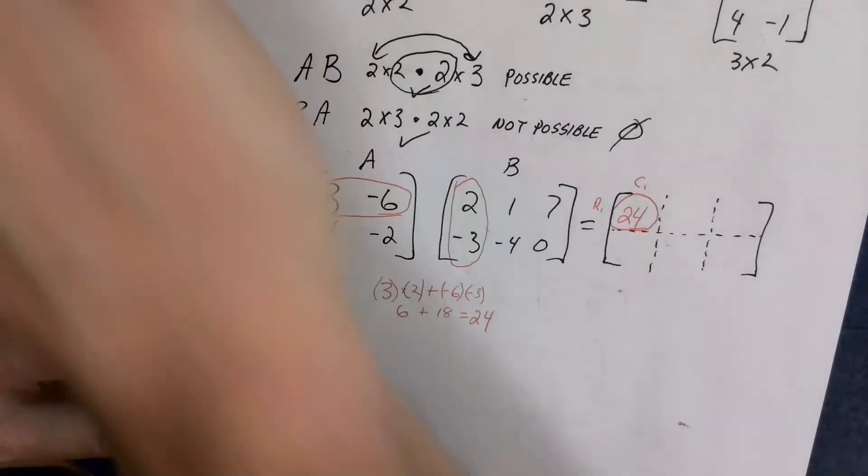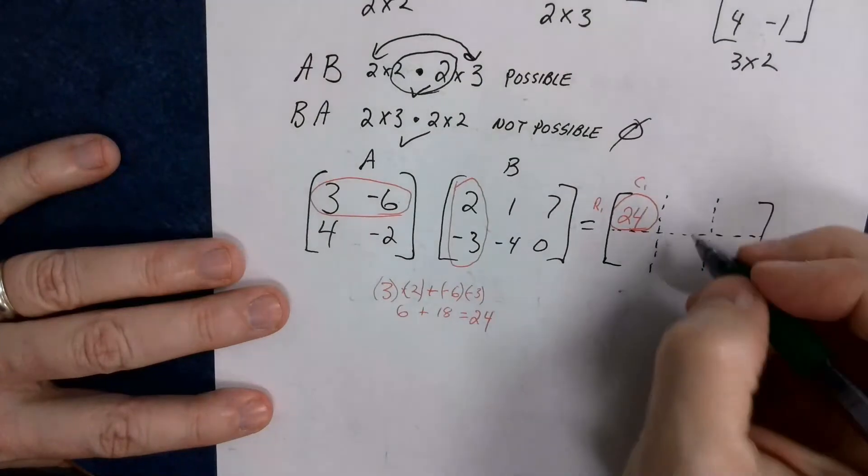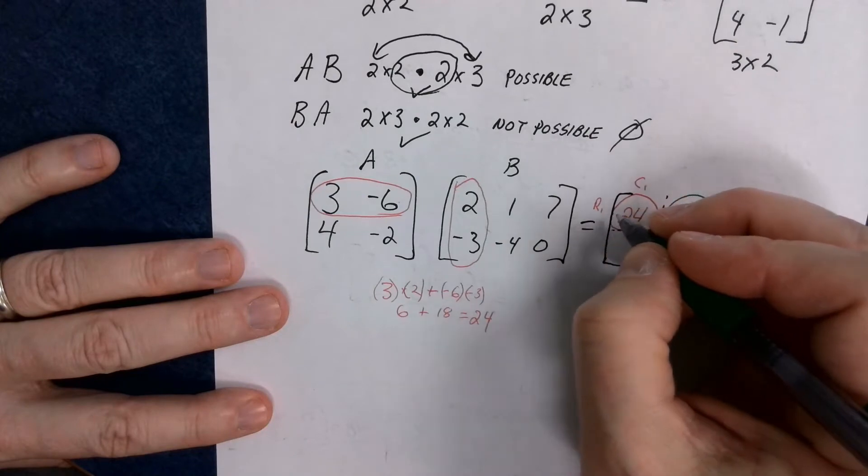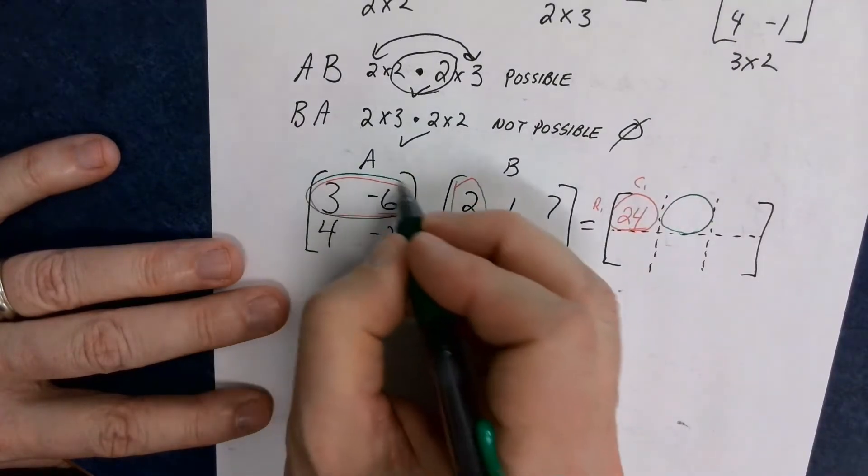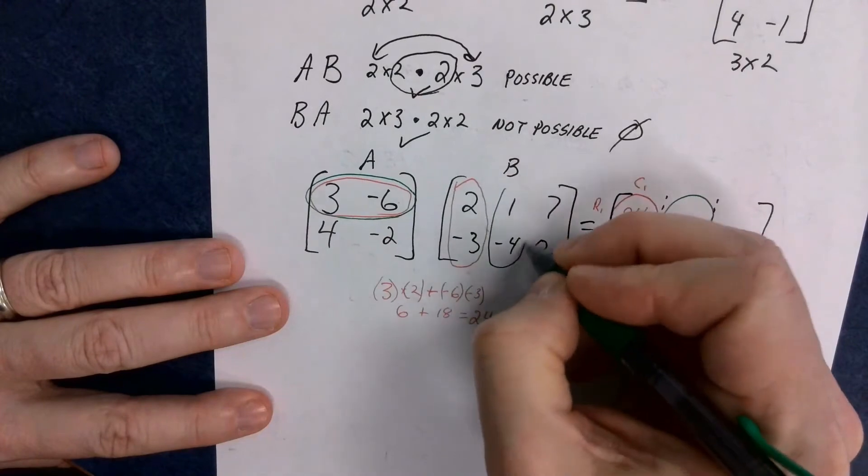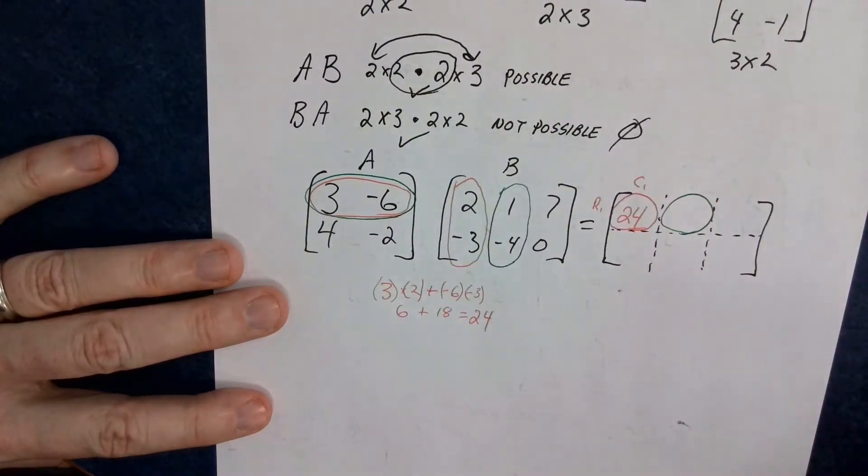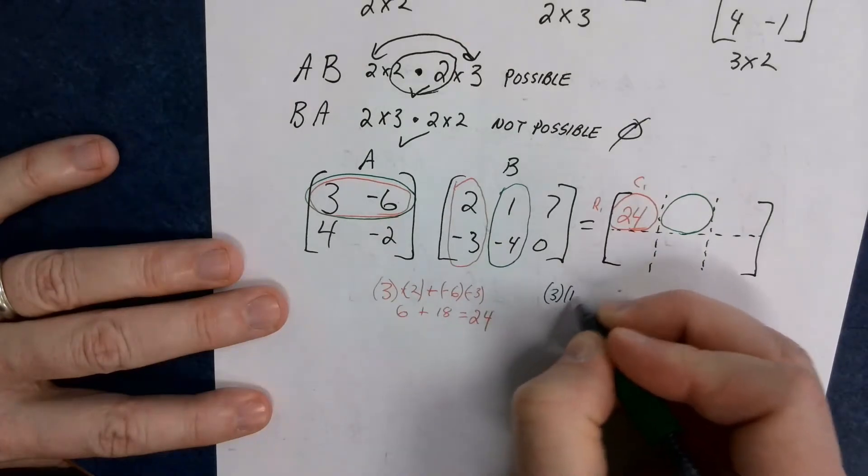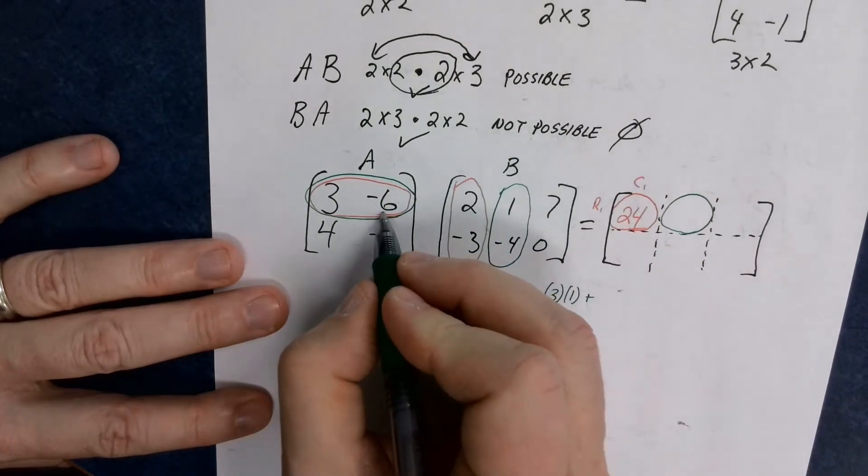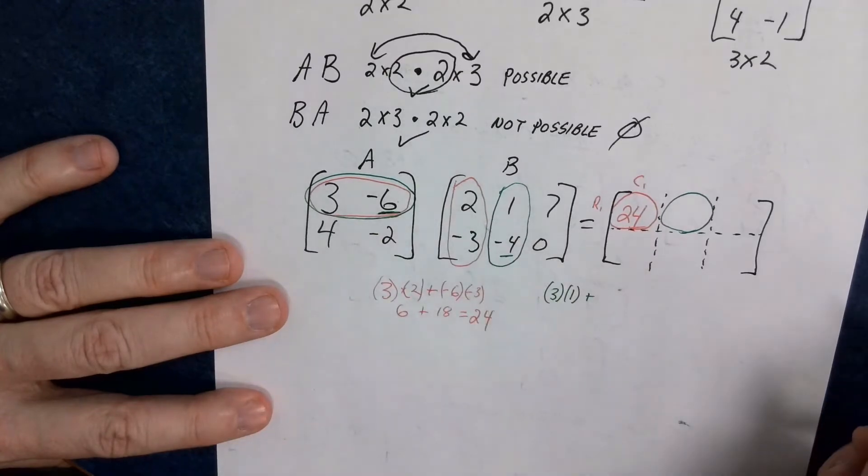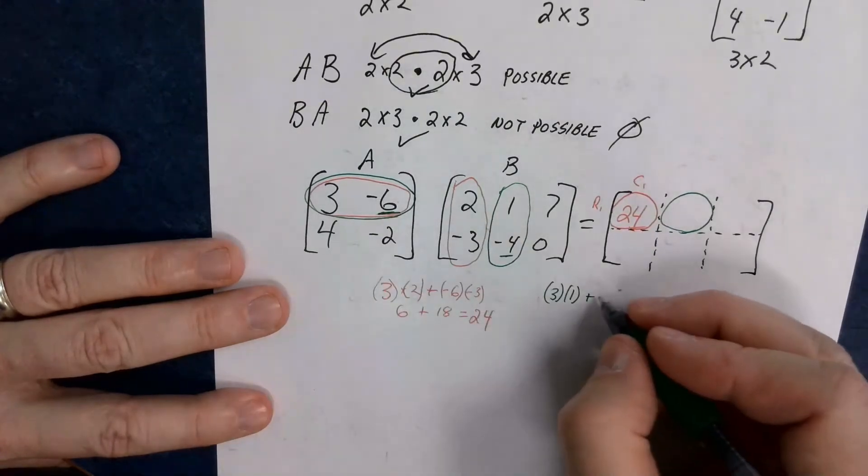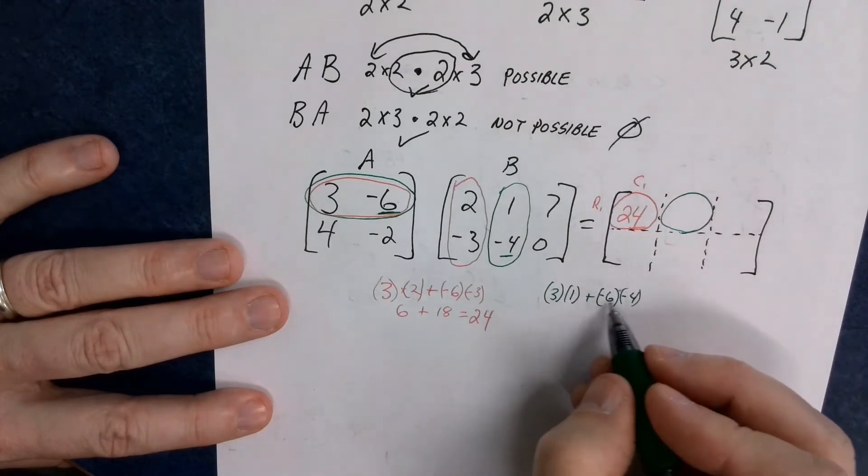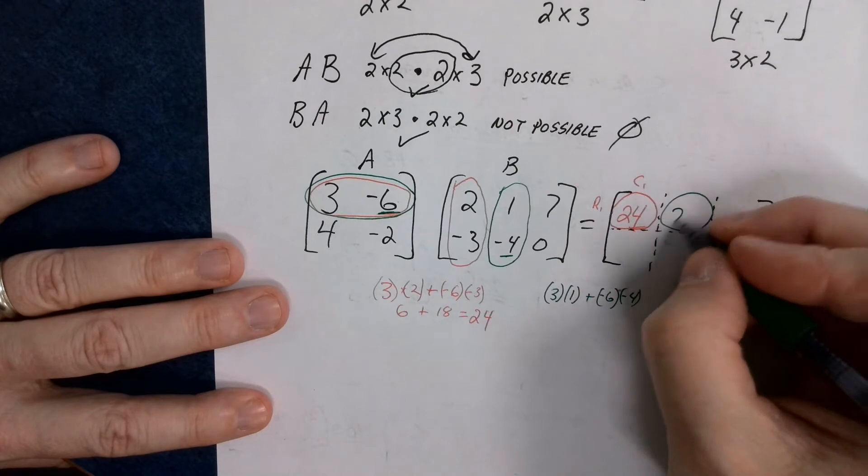So again, to keep the colors straight, this cell location is row one, column two. So I'm going to go row one, column two. And again, first thing times first thing, three times one, plus second thing times second thing, negative six, times negative four. So three plus 24 is 27.